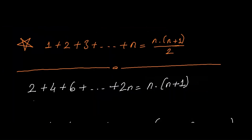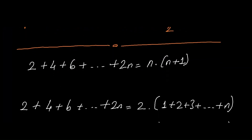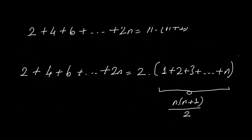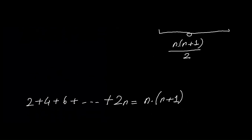Let's continue with the second formula of the video — please keep in mind the first formula. We want to explain why the sum of consecutive positive even integers from 2 to 2n equals n times (n plus 1). We can write the consecutive positive integers in parentheses like that. From the first formula we know the result of the parenthesis. Now we can easily write the sum of consecutive positive even integers from 2 to 2n equals n times (n plus 1).